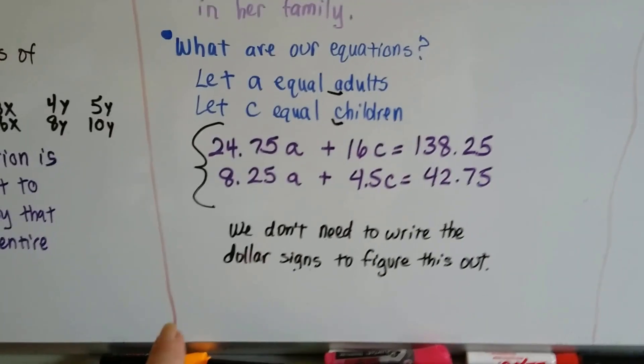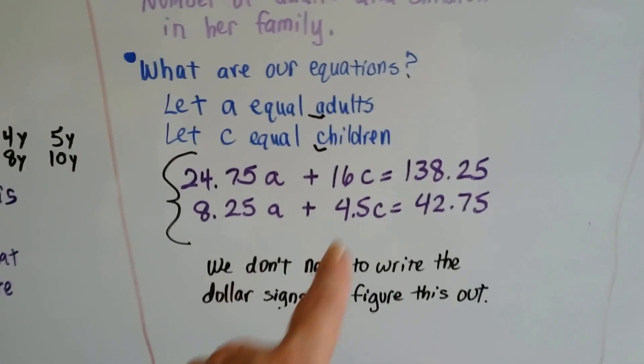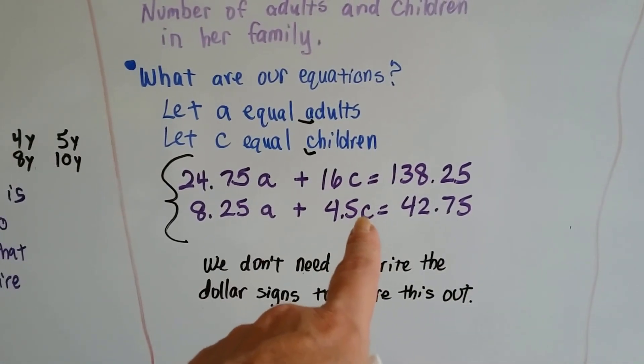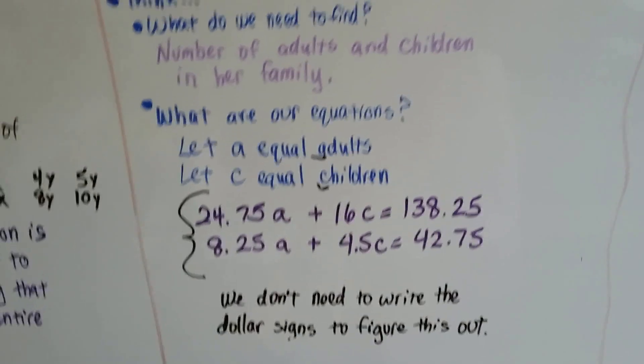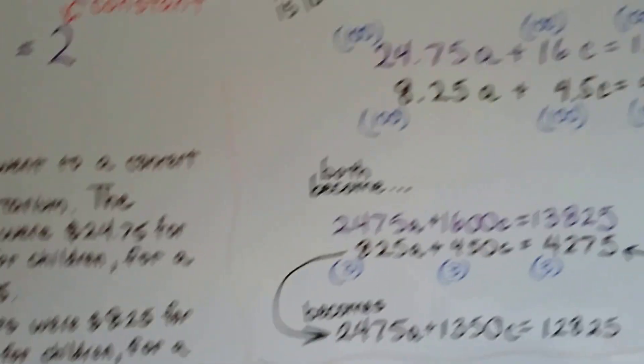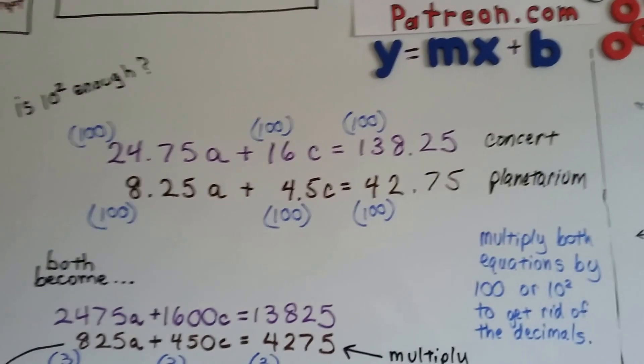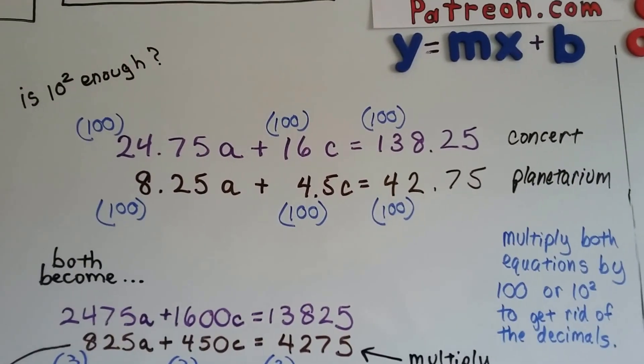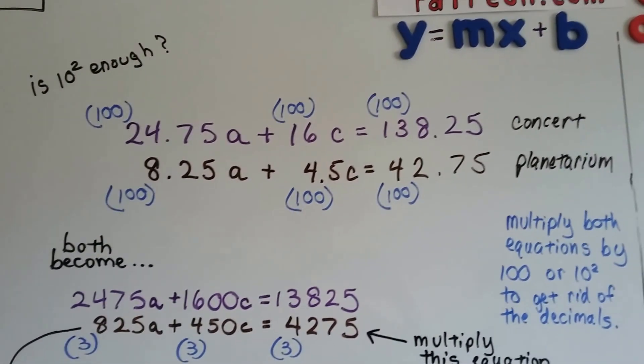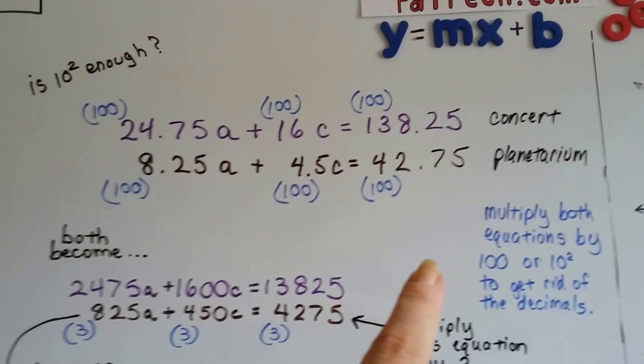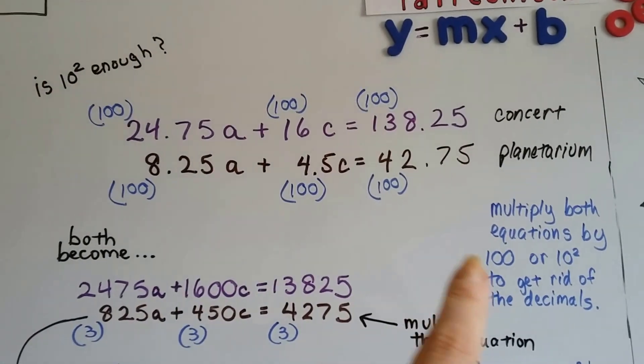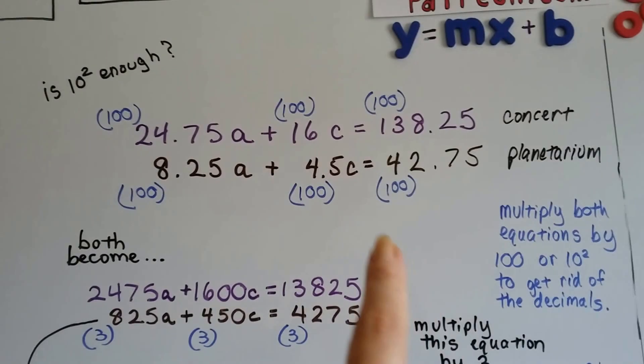We don't need to write the dollar signs to figure this out. The first thing we've got to do is figure out a power of 10 to multiply the equation by to get rid of these decimals. We're going to multiply both equations by 100, that would be 10 to the second power, to get rid of the decimals.